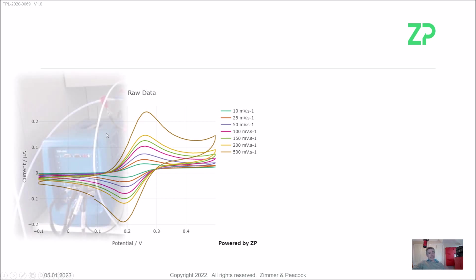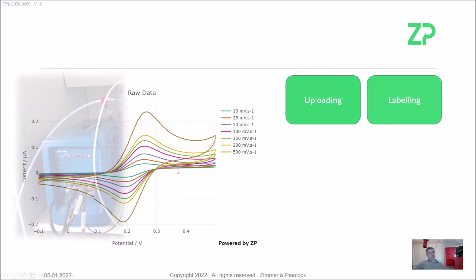It's worth saying that this data comes off a Biologics instrument — Biologics make a lot of potentiostats, and that data was gathered using one. Biologics allows you to export the data as an Excel file, and if you do so, we can upload it to Julie. Today I'll show uploading, labeling, tools, and graphing.